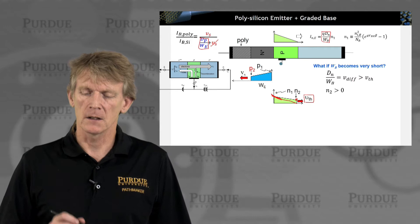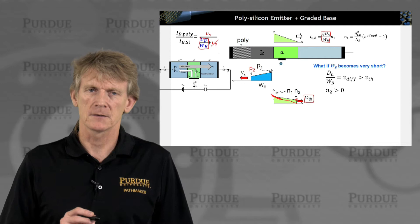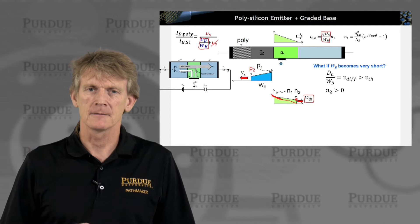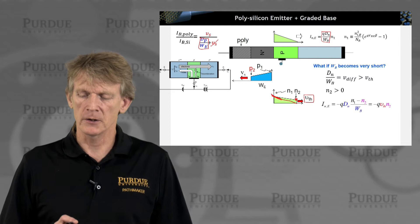As long as the base is long, as long as the diffusion velocity is smaller than the thermal velocity, it will go to zero. But if the carriers just can't move that fast, they can't diffuse that fast, then your N2 becomes finite. Now you can do the same math of what all we did for the poly emitter and do it here again.